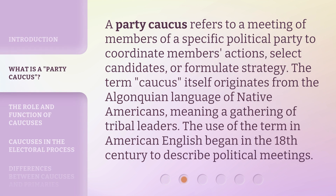A party caucus refers to a meeting of members of a specific political party to coordinate members' actions, select candidates, or formulate strategy. The term 'caucus' itself originates from the Algonquian language of Native Americans, meaning a gathering of tribal leaders. The use of the term in American English began in the 18th century to describe political meetings.